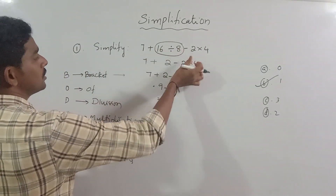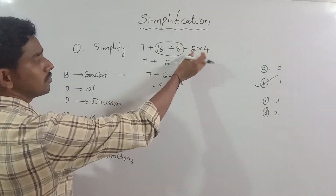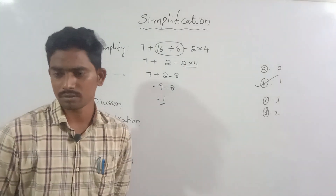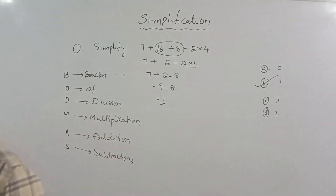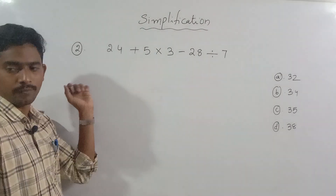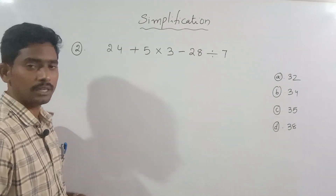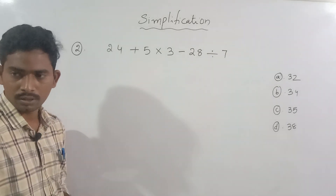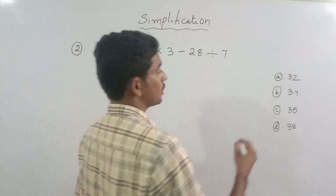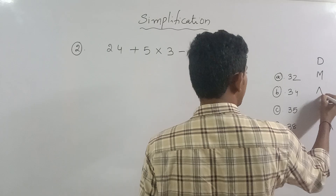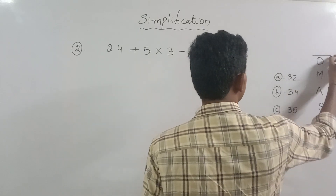If you separate plus 2 minus 2, you have a problem. Plus 2 minus 2 is separate — you have a problem. Okay, look at this: 24 plus 5 into 3 minus 28 is divided by 7. So first you have Division, then Multiplication, then Addition, then Subtraction.